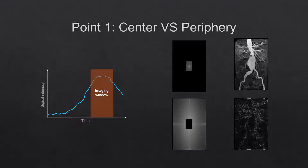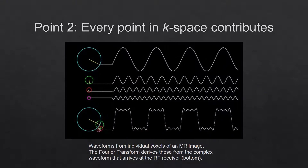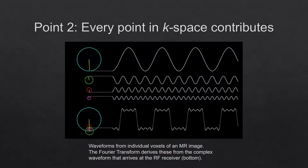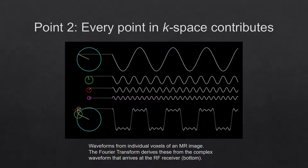Looking at these images, you might then ask: why don't we only image the center of k-space and make a very fast sequence? Which brings us to point two: every point in k-space contributes to each and every pixel in the final image.